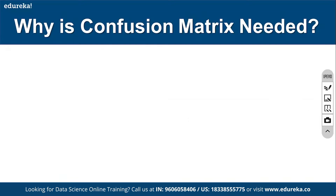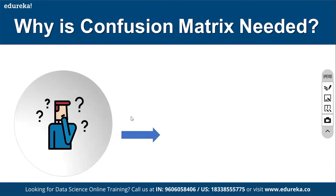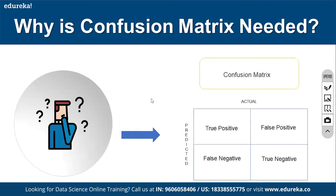The confusion matrix is a tabular format report that compares the actual data (the input) with the predicted data (what the model predicted). It contains four different metrics: True Positive, True Negative, False Positive, and False Negative.